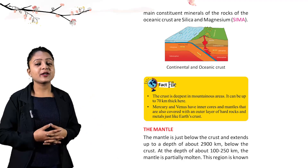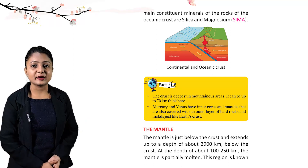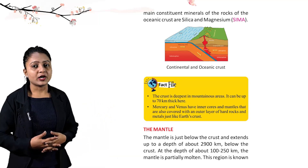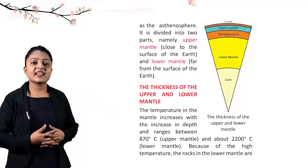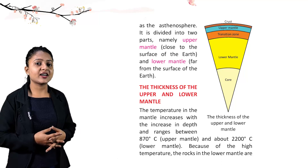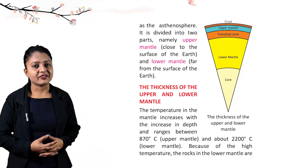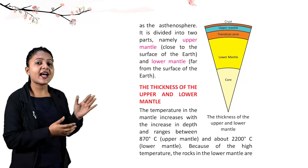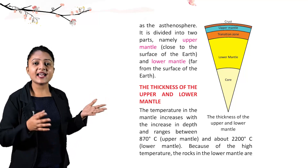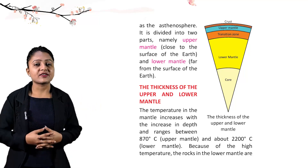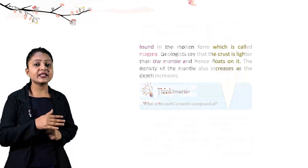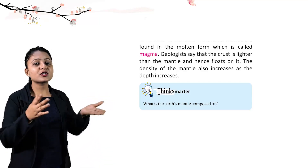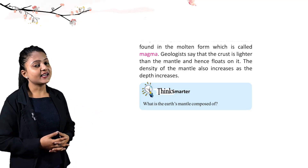The mantle is just below the crust and extends to a depth of about 2900 km. At a depth of about 100 to 250 km, the mantle is partially molten — this region is known as the asthenosphere. It is divided into upper mantle (close to the surface) and lower mantle (far from the surface). Temperature ranges between 870 degrees Celsius in the upper mantle and about 2200 degrees Celsius in the lower mantle. Due to high temperature, rocks in the lower mantle are in molten form, called magma. The crust is lighter than the mantle and hence floats on it. The density of the mantle also increases with depth.